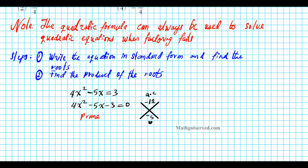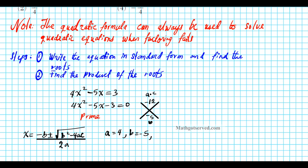The quadratic formula, which we learned in Algebra 1, is: x equals negative B plus or minus the square root of B squared minus 4AC, all divided by 2A. In this problem, A is 4, B is negative 5, and C is negative 3. Be really careful with the signs when using the quadratic formula.